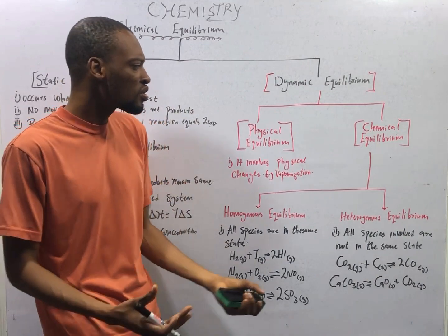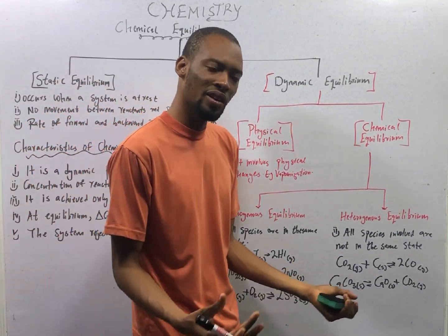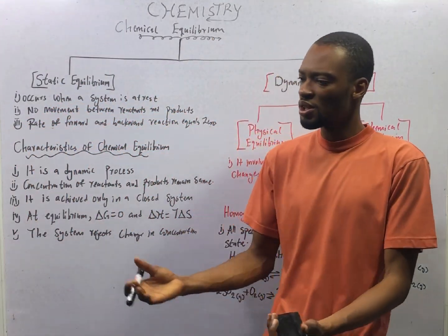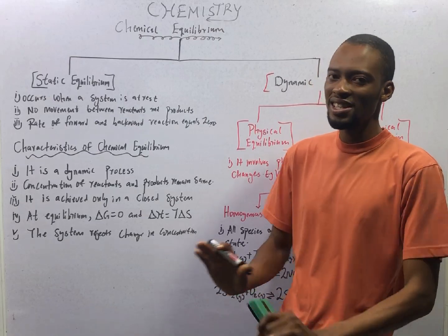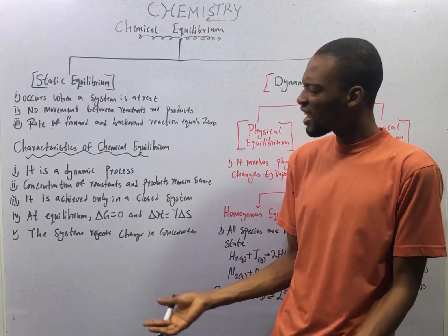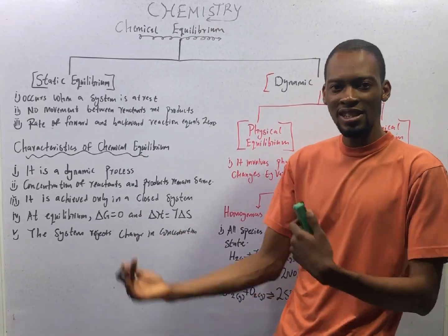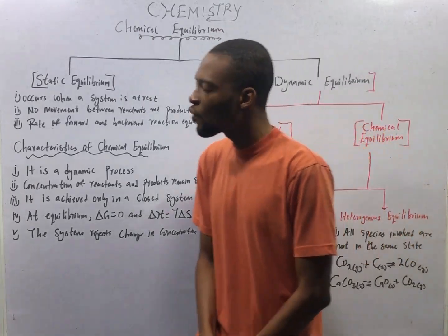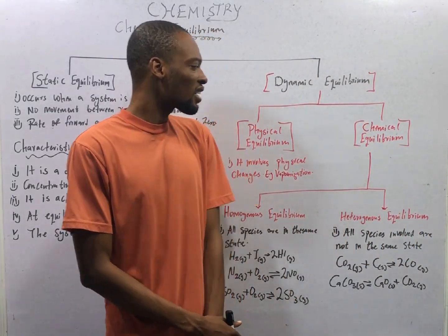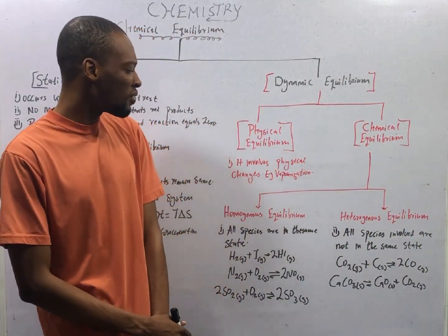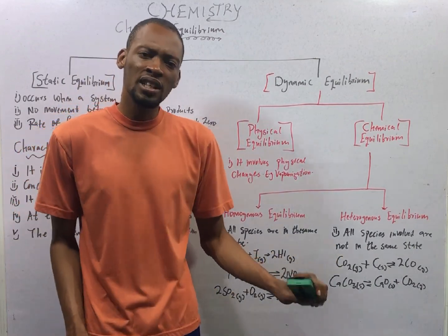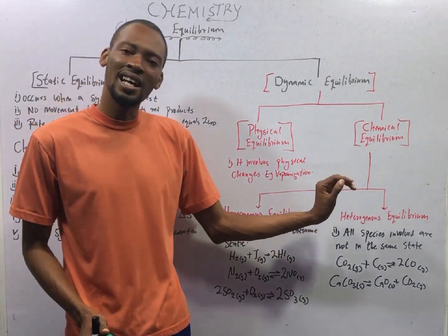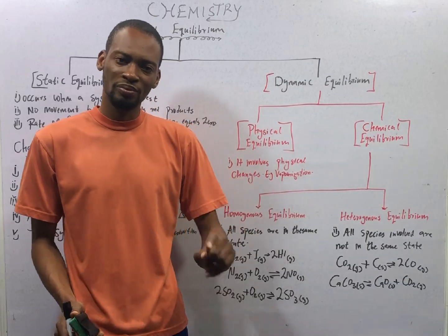Dynamic equilibrium is broken down into physical equilibrium and chemical equilibrium. Physical equilibrium involves physical changes — for example, vaporization of water. Water changes from liquid to gaseous state; no new substance is formed, and it is a reversible process. Chemical equilibrium, on the other hand, is broken down into homogeneous equilibrium and heterogeneous equilibrium.